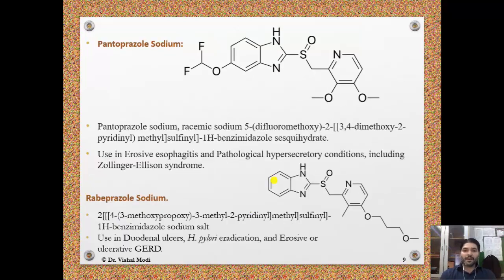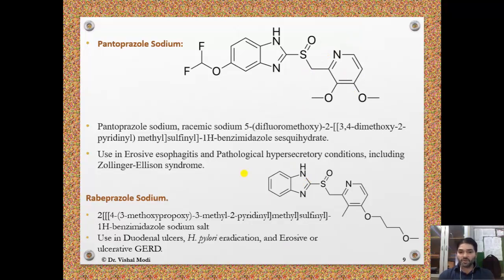Pantoprazole sodium also features a benzimidazole main nucleus, sulfonyl connection, and pyridine ring system. Pantoprazole sodium is a racemic sodium 5-(difluoromethoxy)-2-[(3,4-dimethoxy-2-pyridyl)methylsulfinyl]-1H-benzimidazole sesquihydrate derivative. It is used in erosive esophagitis and pathological hypersecretory conditions including Zollinger-Ellison syndrome.